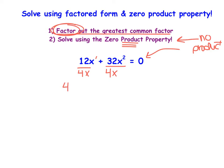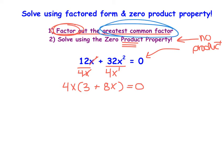I'm going to undistribute the 4x. Inside I get 12 divided by 4 is 3, and the x's cancel. Then 32 divided by 4 is 8, and x squared over x to the first — 2 minus 1 — leaves me with x to the first on the inside. So here I have factored out the greatest common factor, which is 4x.